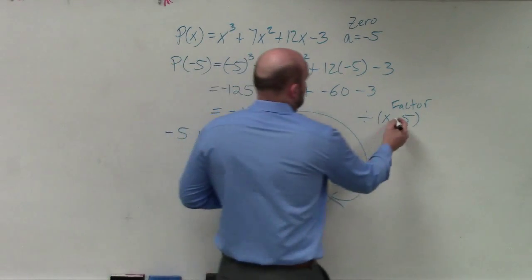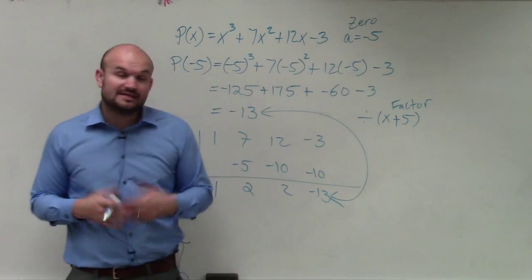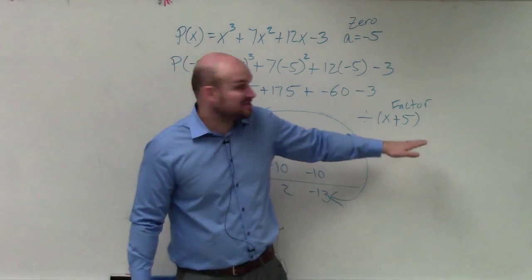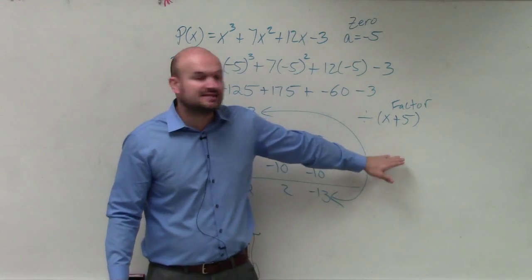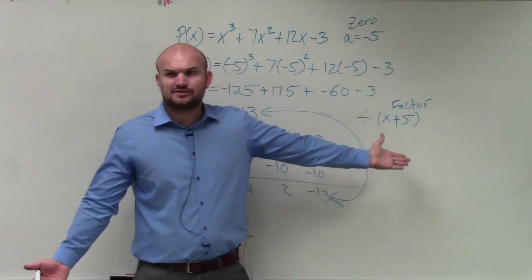So x plus 5 is the factor. Does x plus 5 divide into this polynomial? Well, what we need to do to determine that is find the zero. So how do you go from factors to zeros? What do you do?